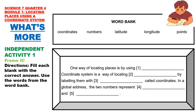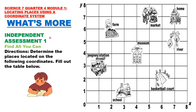Let us now discuss the different activities in What's More. Independent Activity 1 — Frame It: Fill each blank with the correct answer using the words from the word bank. The words are: coordinates, numbers, latitude, longitude, and points. One way of locating places is by using a coordinate system. A coordinate system is a way of locating points by labeling them with numbers called coordinates. In a global address, the two numbers represent latitude and longitude.